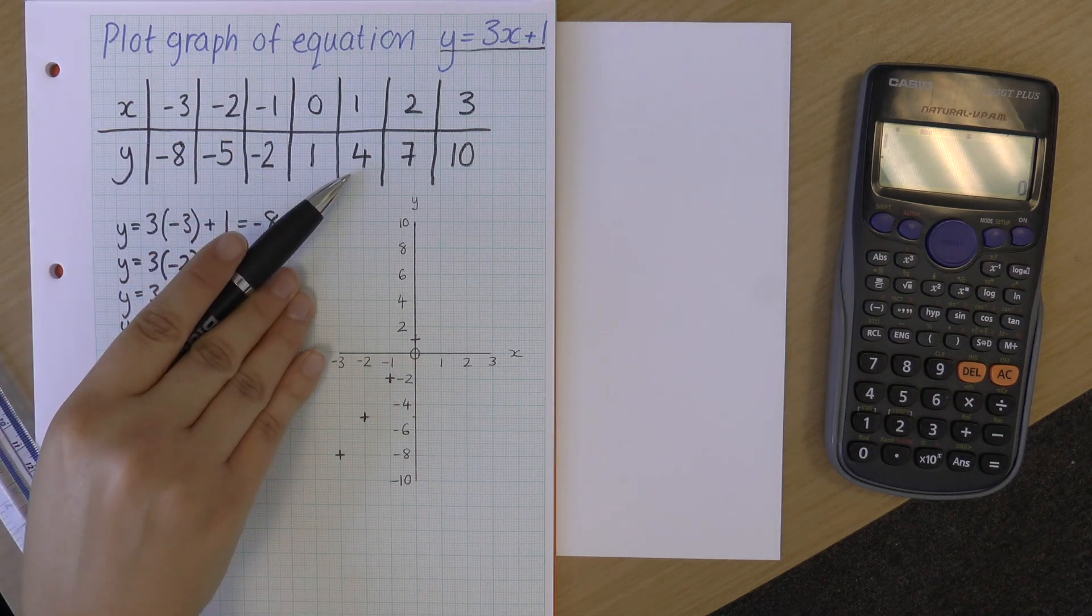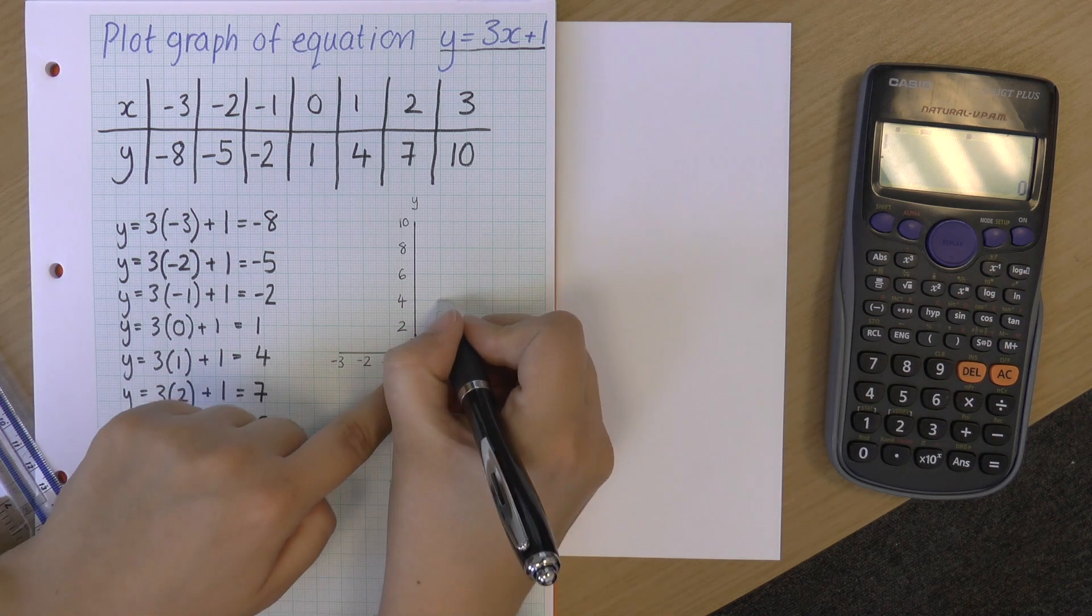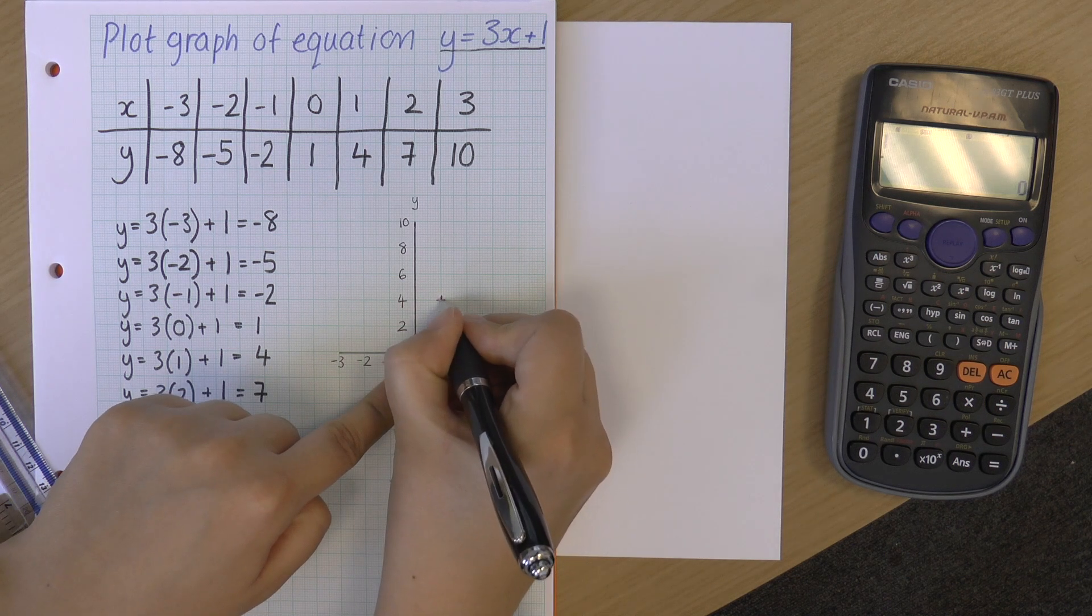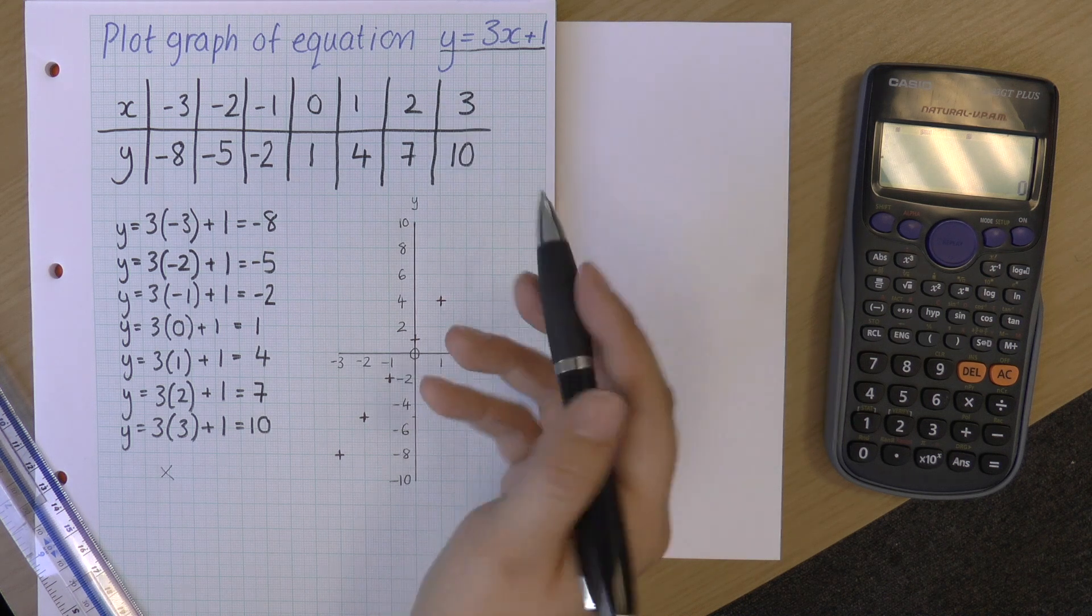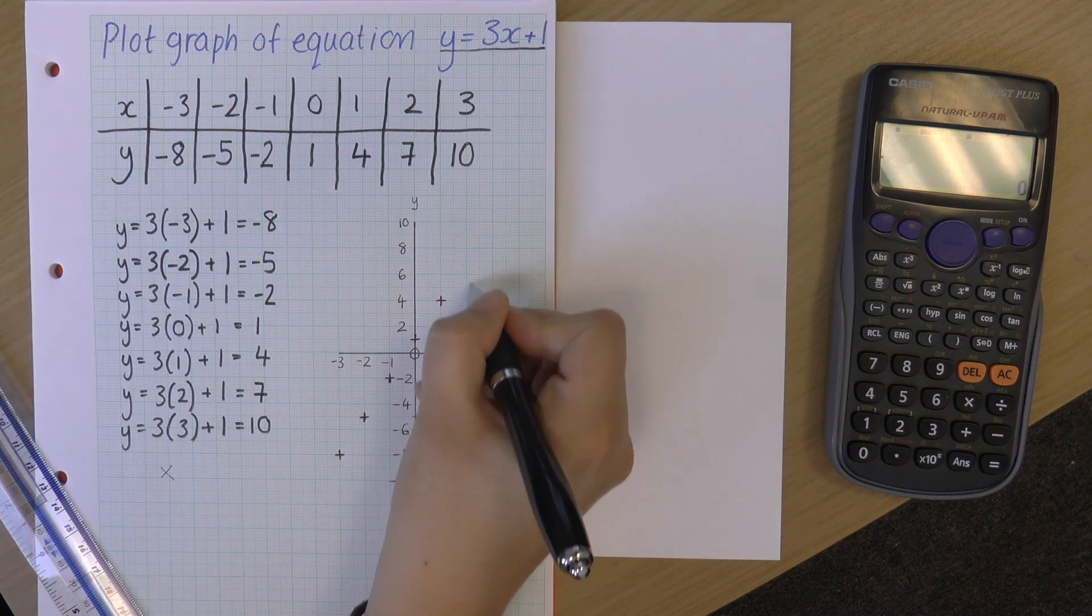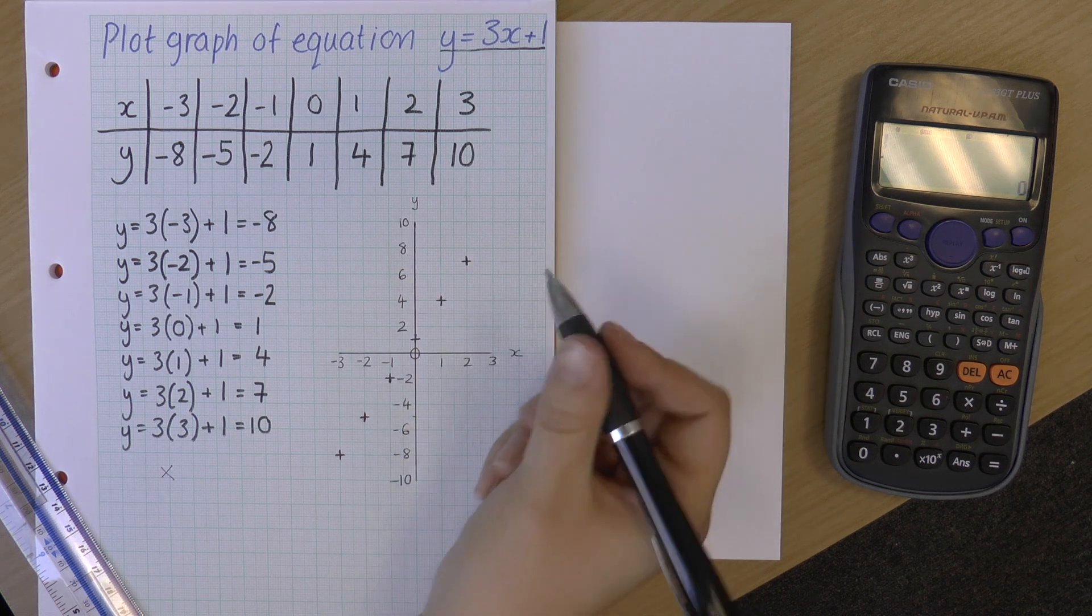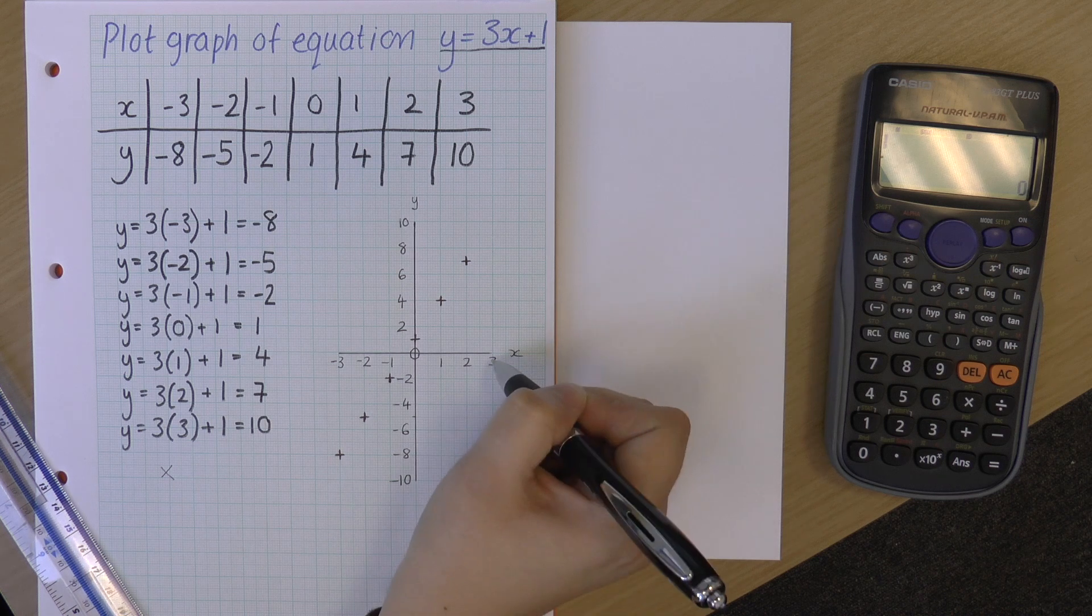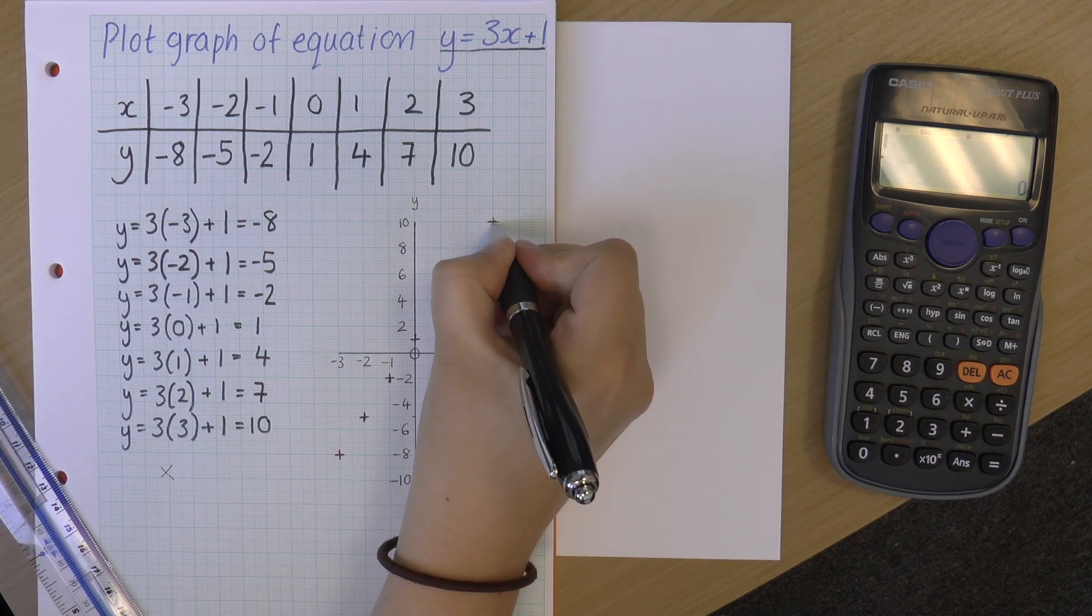x equals 1, y is 4 is my next. So x equals 1, y is 4. Next is x equals 2, y is 7. x equals 2, y is 7. Again, halfway between the 6 and 8. And my last one, x equals 3, y equals 10. So that's here.